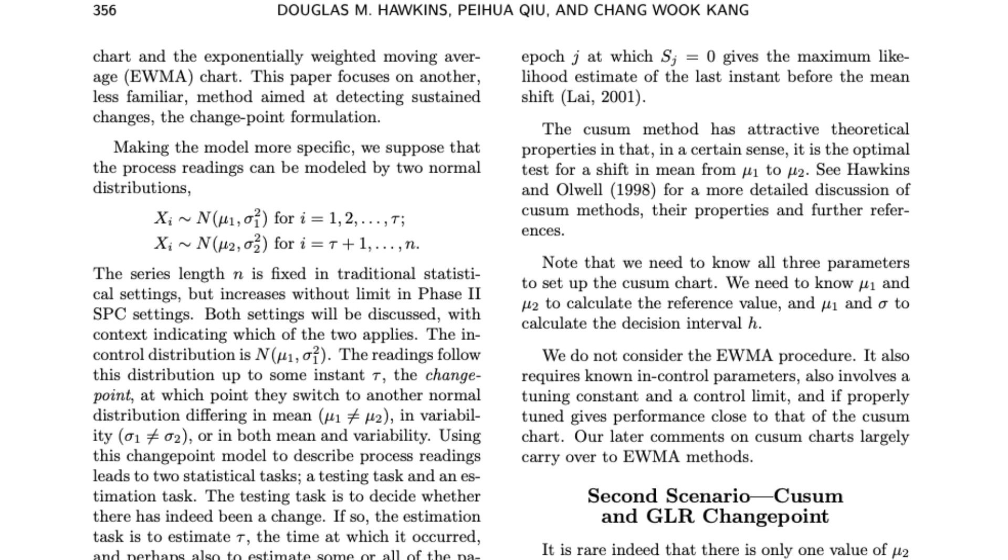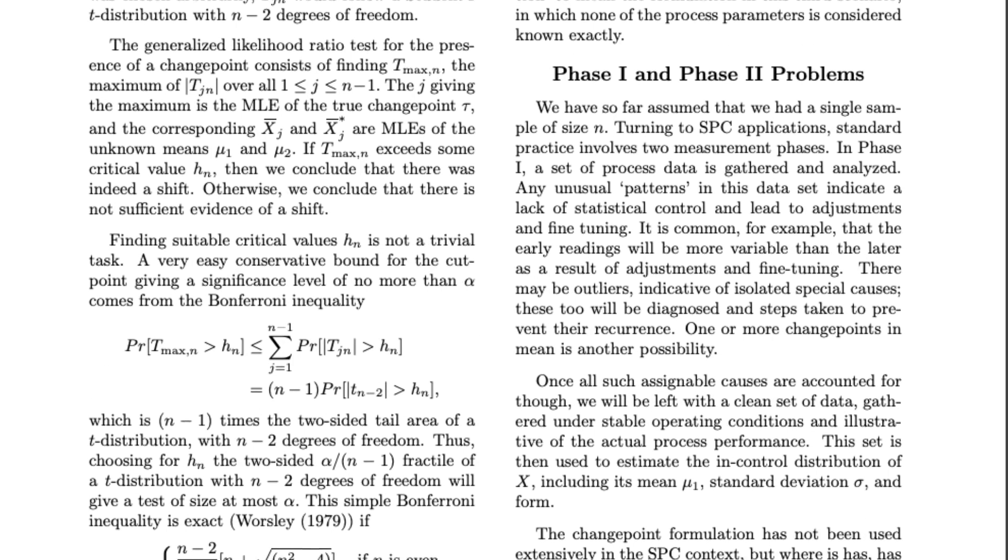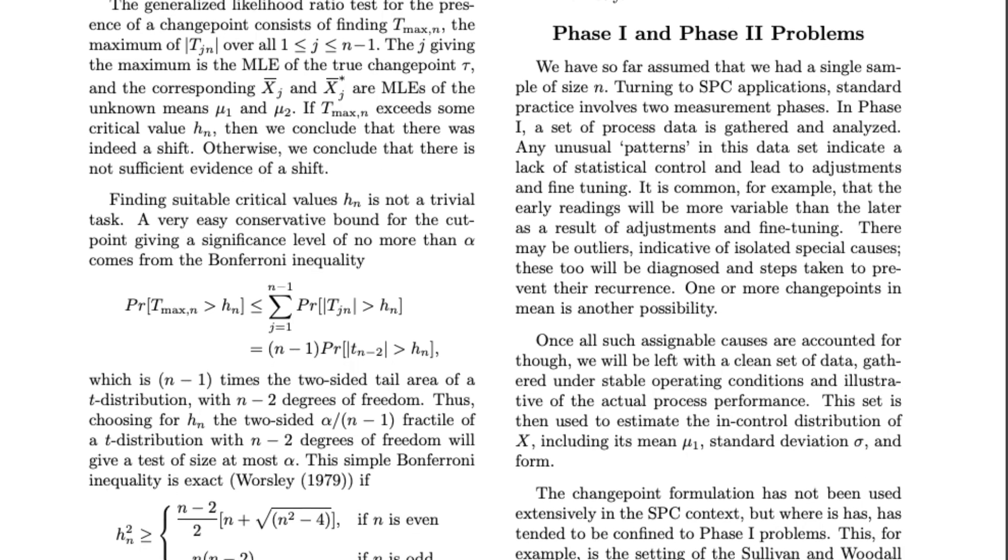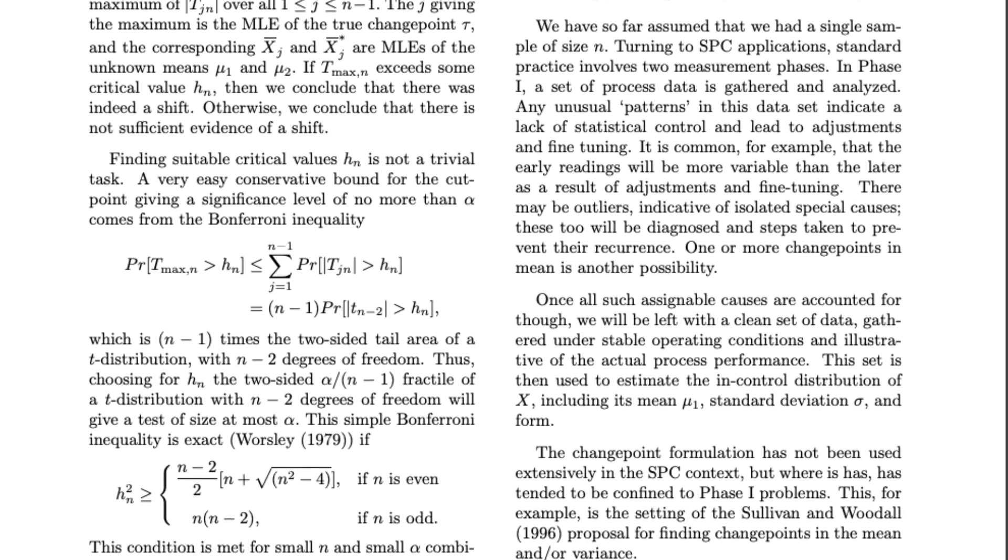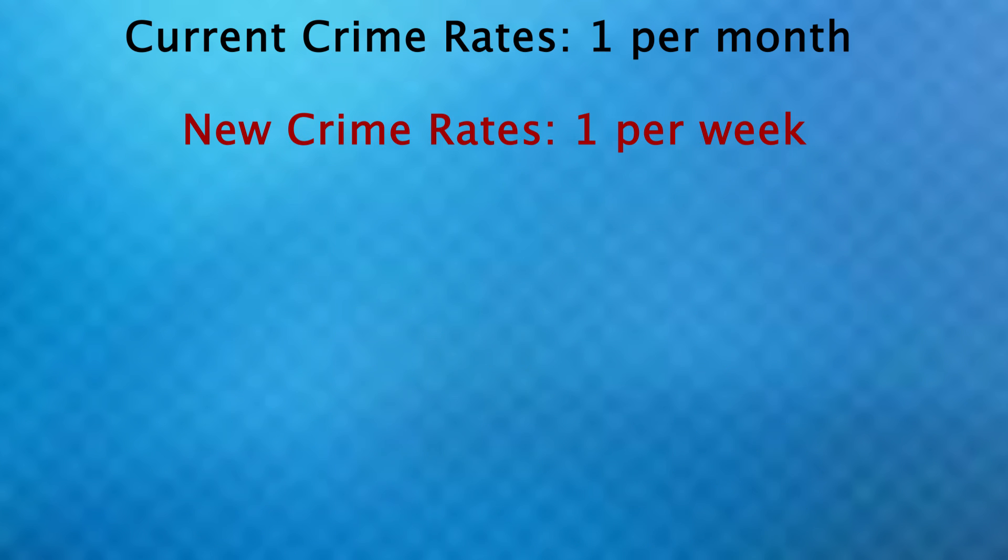And although most of the sources I found on this were pretty complex, I did find a very simplified algorithm for determining if a change point has occurred. So let's see how that works with crime rates. Let's say in some town, on average, one crime is committed every month. But if crime rates go up to once per week, then that can be considered like a state of emergency or something that we don't want to get to. So here's how we determine if that change has occurred.